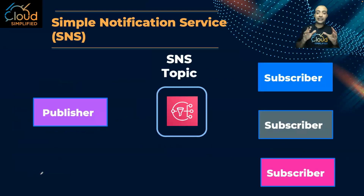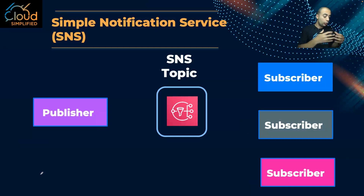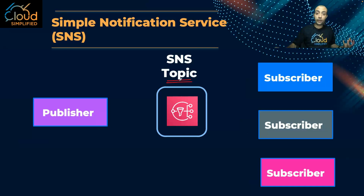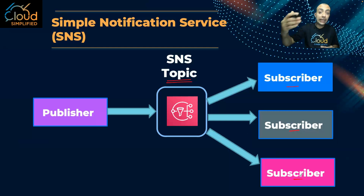The final service for this lesson is SNS — Simple Notification Service. This is used when you want to send notifications like emails or SMS, for example every time a user places an order. It works with a publisher who sends messages to a topic, and anyone who has subscribed to that topic immediately receives the message. While SQS works on a polling model, SNS works on a pub/sub model — publisher and subscriber.